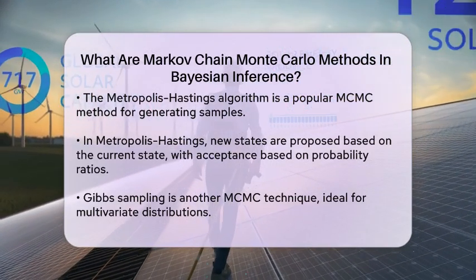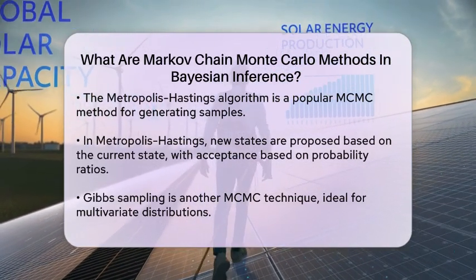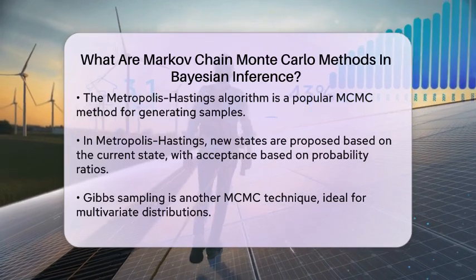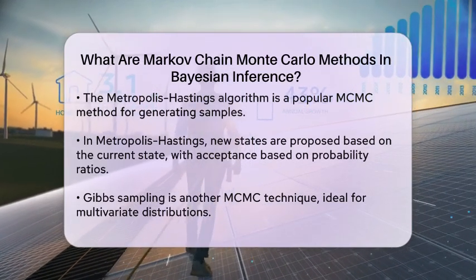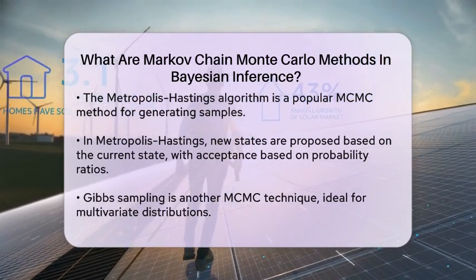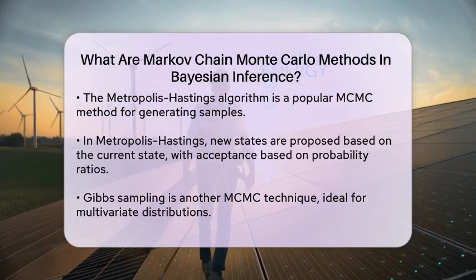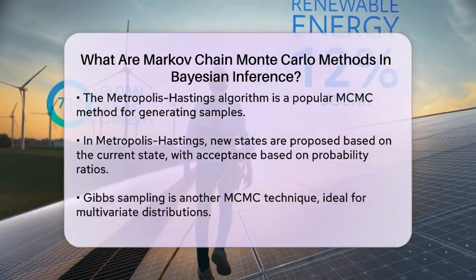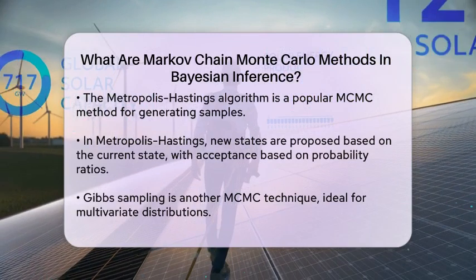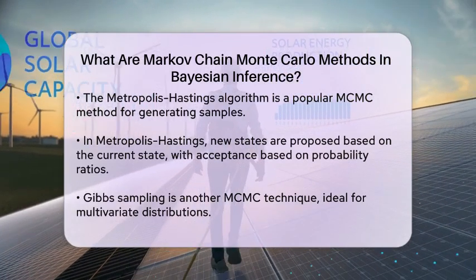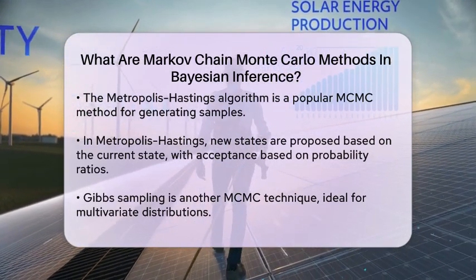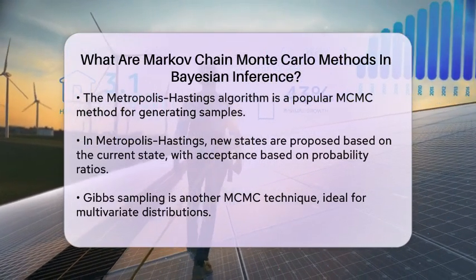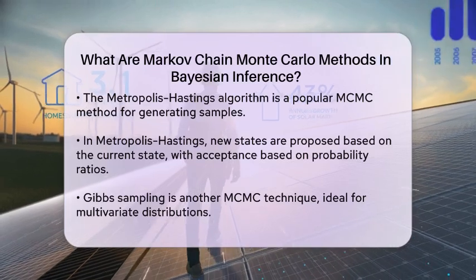Another well-known method is the Gibbs sampling technique, which is particularly useful when dealing with multivariate distributions. Instead of proposing new states for all parameters simultaneously, Gibbs sampling updates each parameter one at a time while keeping the others fixed. This iterative approach allows for a more straightforward sampling process.